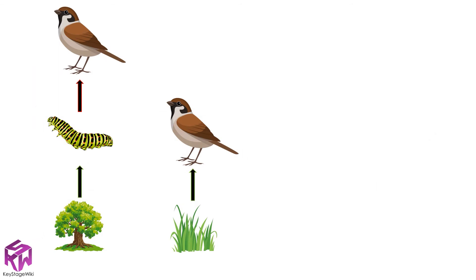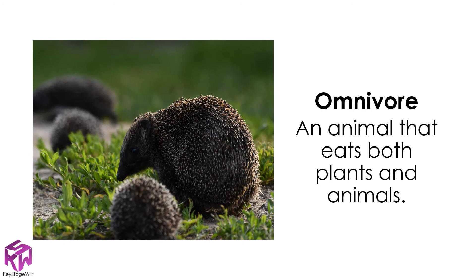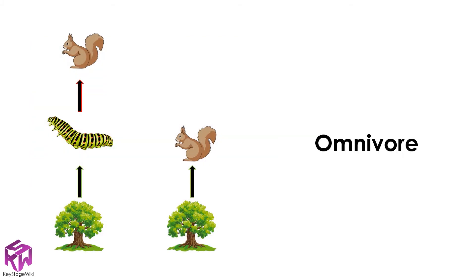So, what do we call an animal that eats both plants and animals? Here are two food chains including a bird called a sparrow. We can see in one food chain that the sparrow eats caterpillars, and in another that the sparrow eats grass. When an animal like a sparrow eats both plants and animals, we call it an omnivore. A squirrel is another example of an omnivore — we know squirrels eat nuts from trees, but they also eat insects like caterpillars.